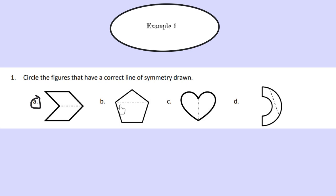Moving on to part B, we have our line of symmetry right here. Already we can see that this is not in the middle, and this shape would be a triangle, and this would be a trapezoid. So if we were to fold this triangle onto this shape, it would not create an exact image or a mirrored image. Therefore, this is not a correct line of symmetry.